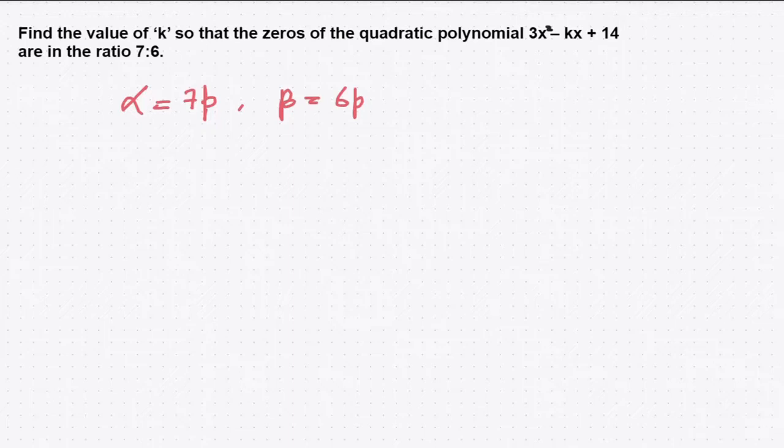Next, find alpha plus beta. How can we get alpha plus beta? Two different types - one is values and the other is coefficients. It's -b/a = 7p + 6p = 13p.